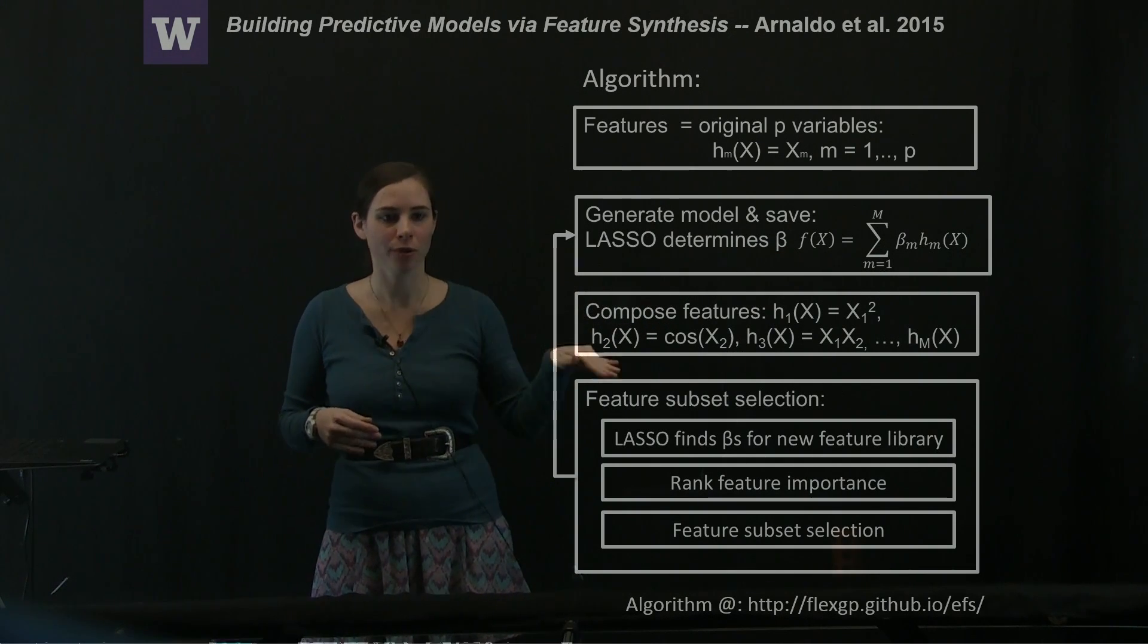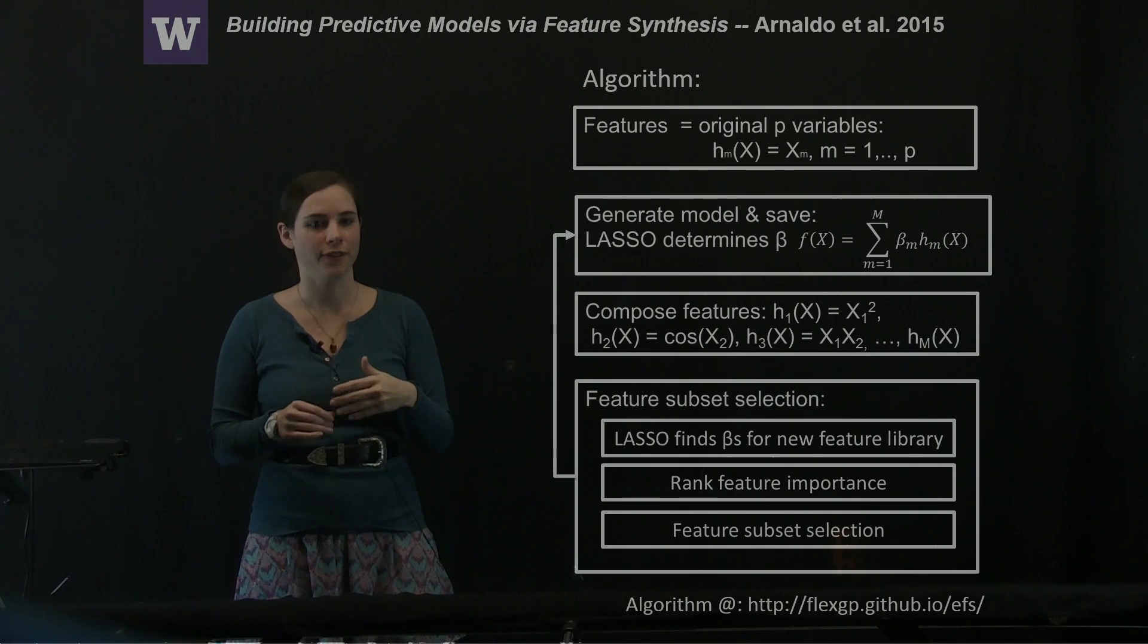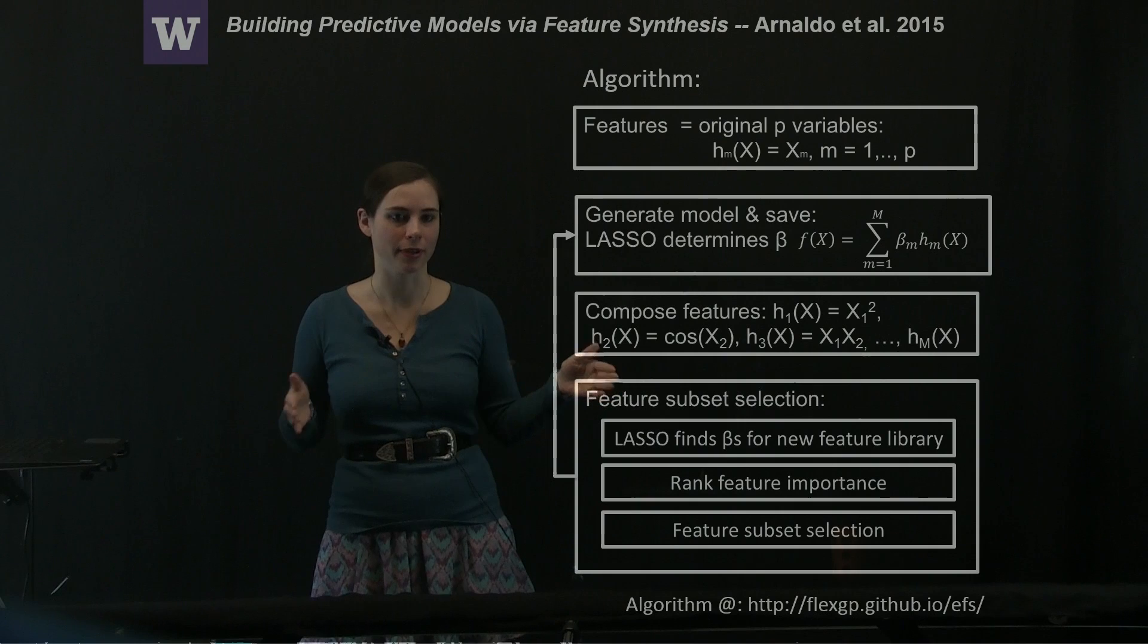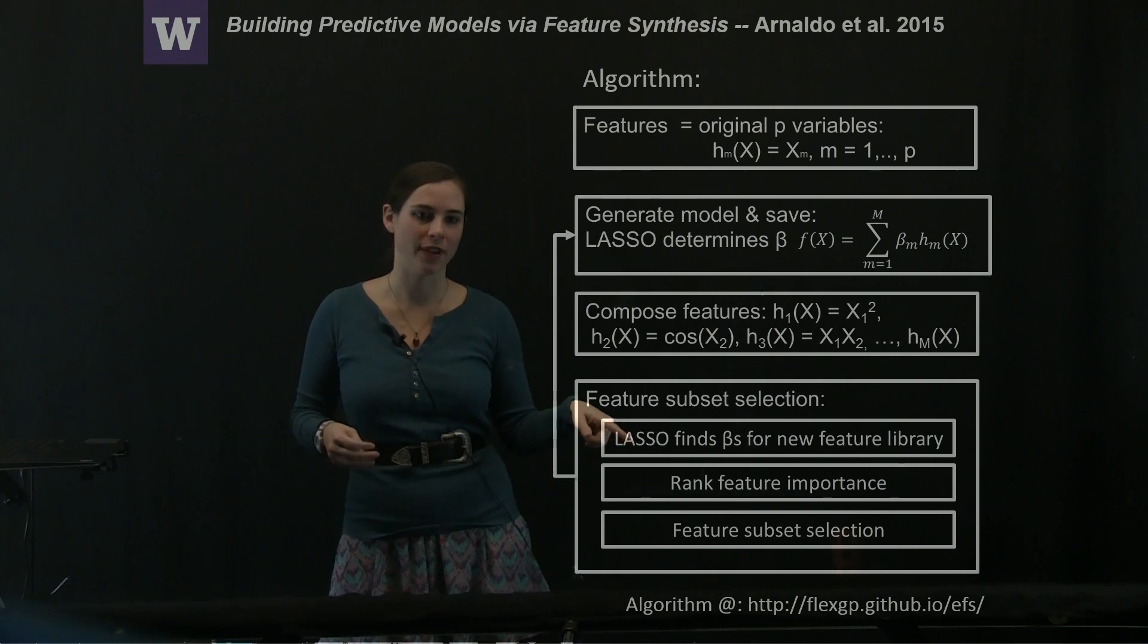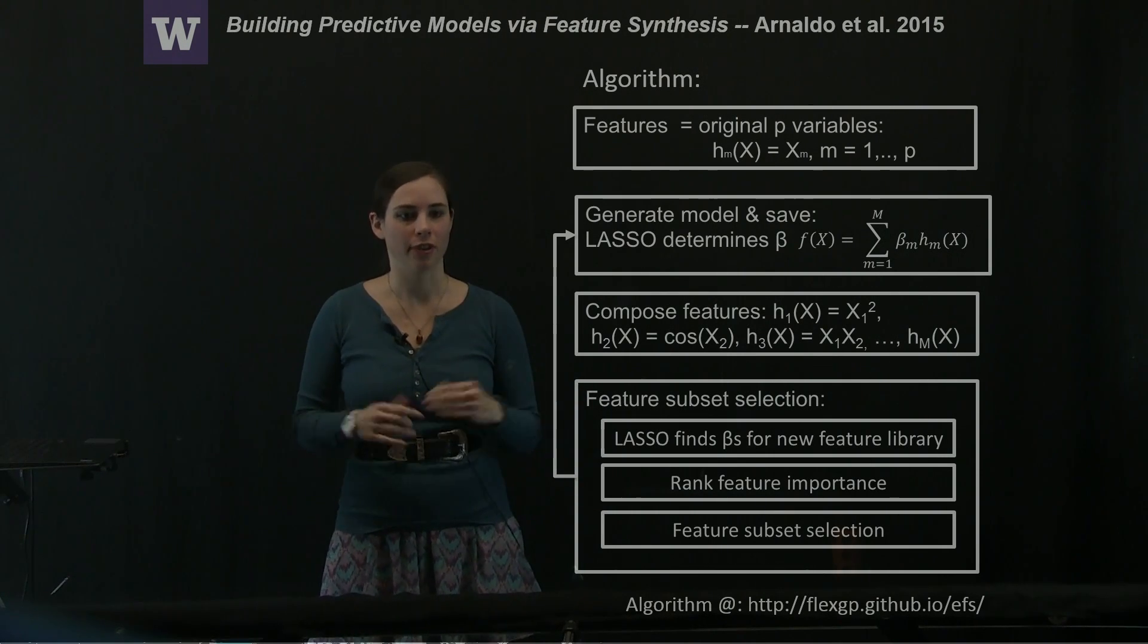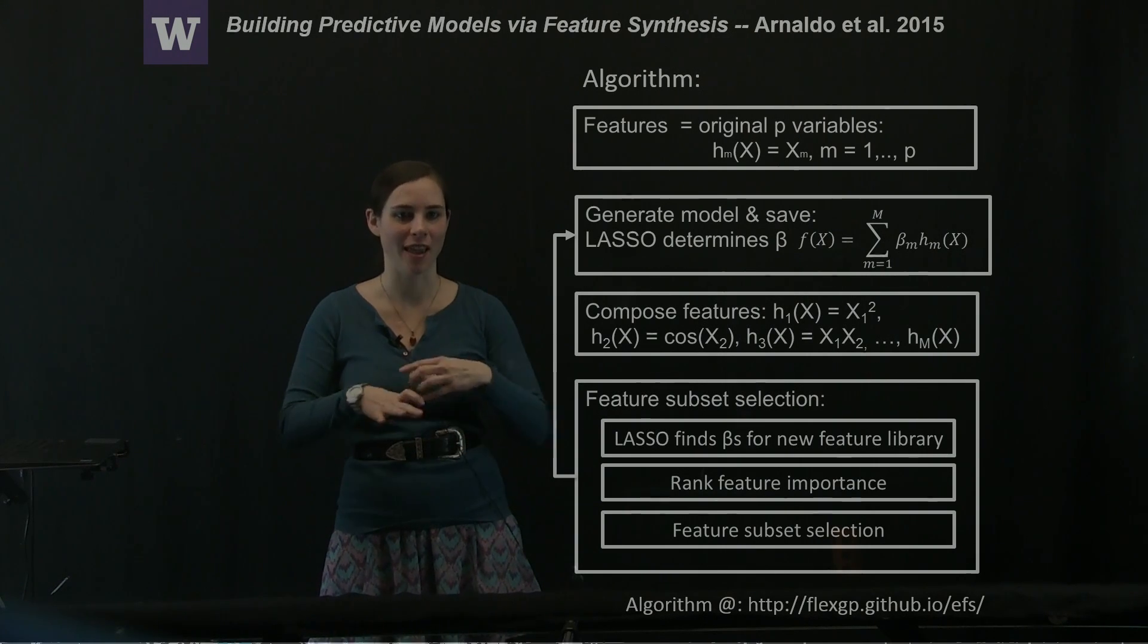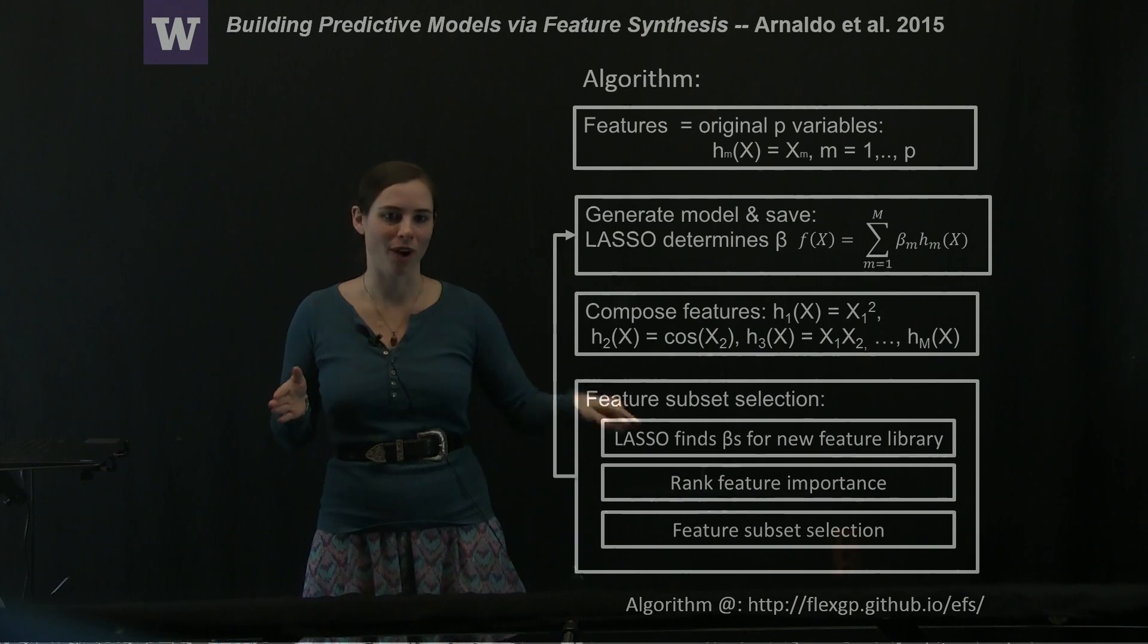Now, compose all of those features into a next generation of features, of feature library using your operators. Select from some subset of those features, using again LASSO to find the betas for the new feature library, rank the feature importance, and then apply a cutoff for the subset selection of those features. So now you have the successful features from your generation one model.